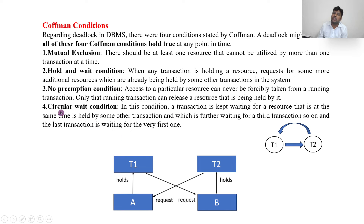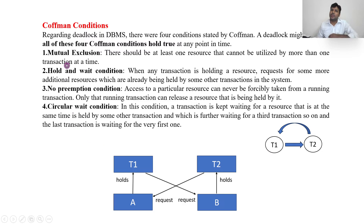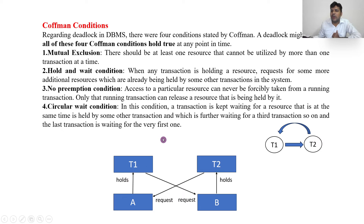The fourth condition is Circular Wait — T1 is requesting T2, T2 is requesting T3, and T3 is requesting T1, forming a circular chain. In our example, T1 requests T2 and T2 requests T1, which is also circular. When all four conditions are true, we can confirm it is a deadlock situation.